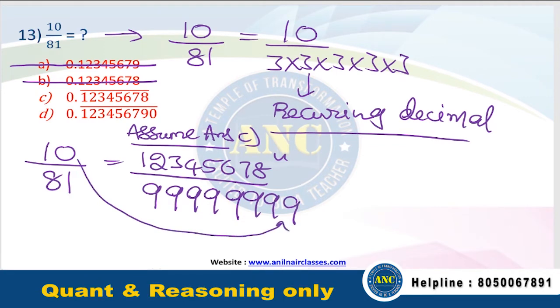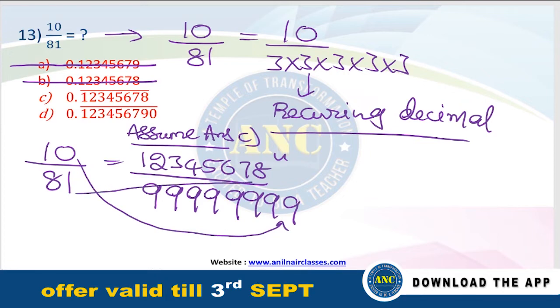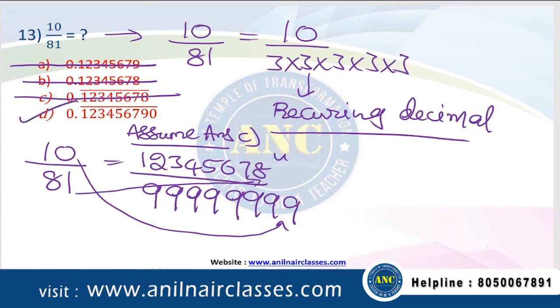Cross multiply. What is 0 into 9? 0. What is 1 into 8? 1 into 8? 8. Are the unit digits matching? No. What is the answer? D.